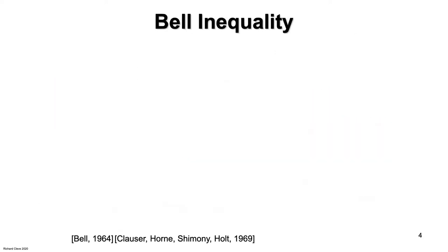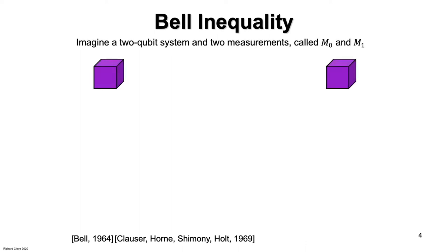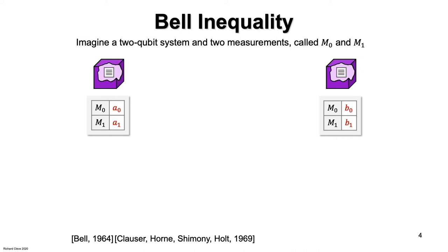Let's continue exploring how a hidden variable model would work. Imagine a two qubit or two particle system and two measurements that we'll refer to as M0 and M1. We're supposing that each particle contains its table of outcomes.